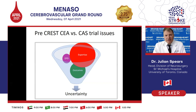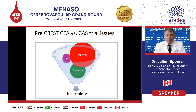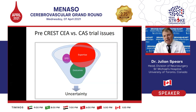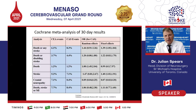Discussion during that period highlighted important points: the expertise required, as angioplasty and stenting was a young and very technical technology requiring significant investment in learning both the medical indications and the actual procedure. Another controversial point was the use of the distal protection device and whether it influenced outcome. The last issue was the measurement of outcomes themselves — what constitutes a major or minor stroke — which was heterogeneous across clinical trials prior to CREST.